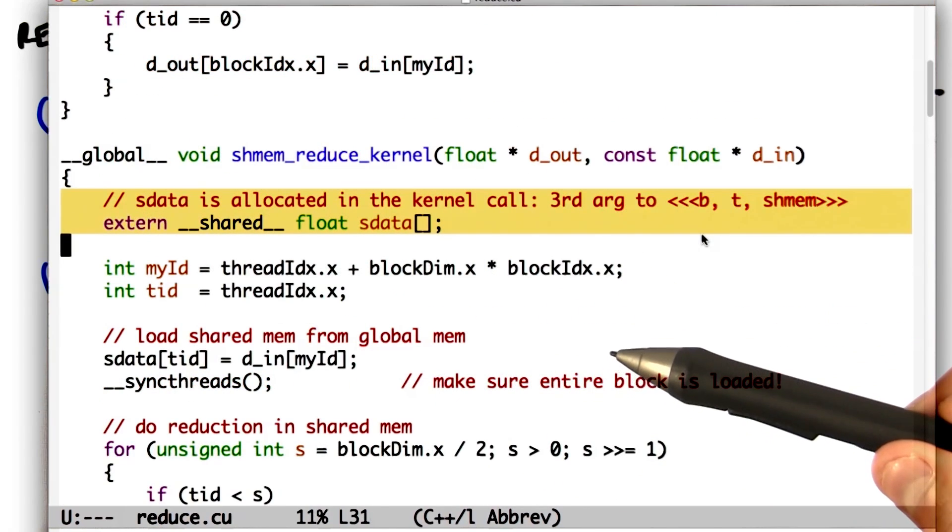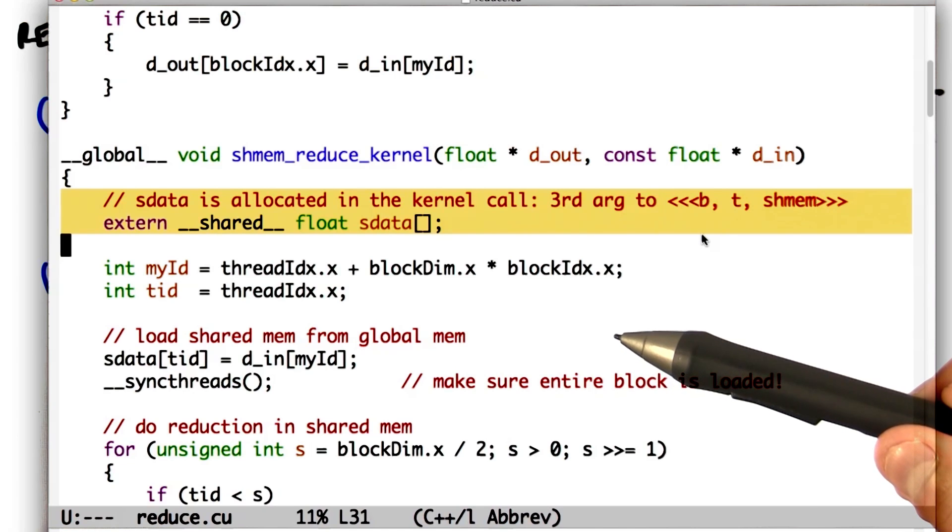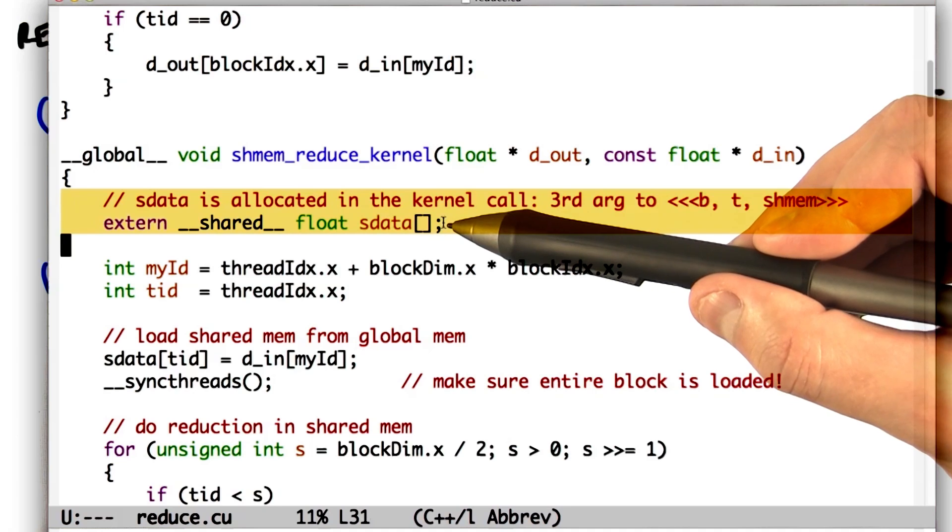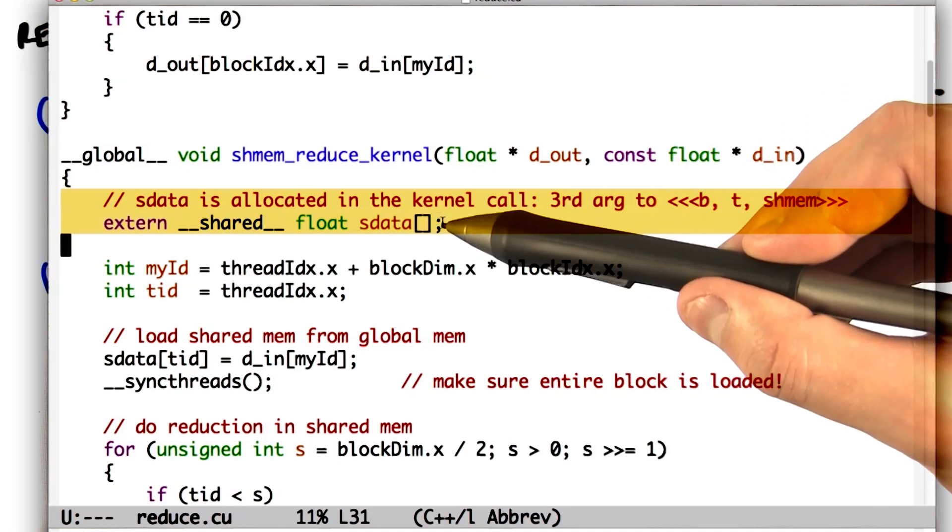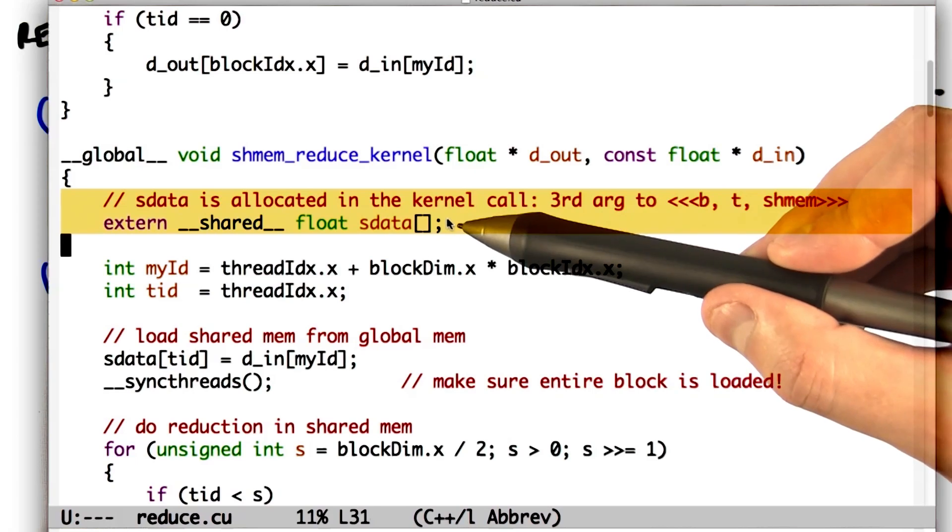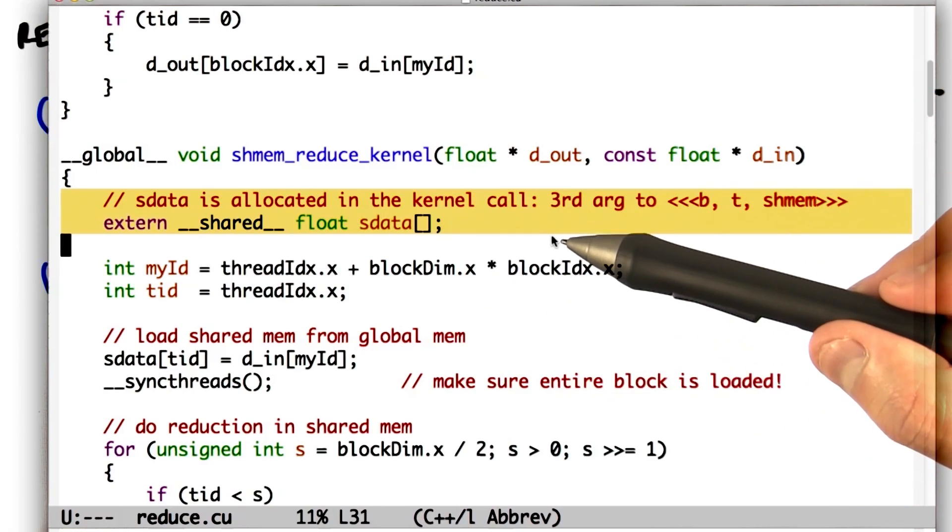The only other interesting part of this code is how we declare the amount of shared memory we need. We do that here, we're declaring that we'll have an externally defined amount of shared data. Now, we haven't actually said how much, so to do that, we have to go down to where we actually call the kernel.